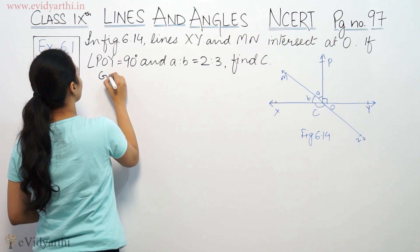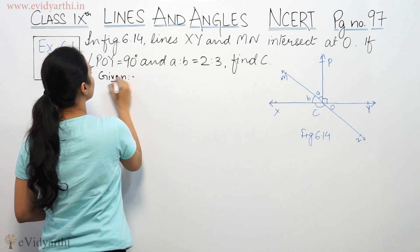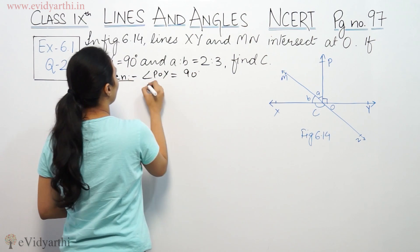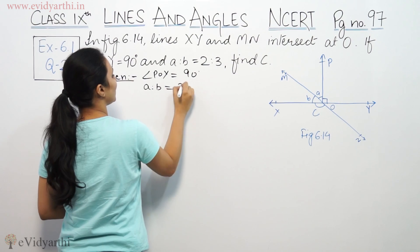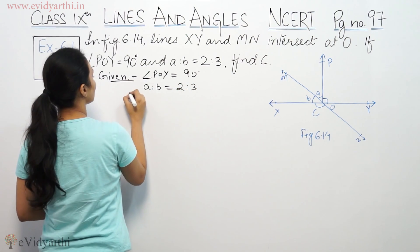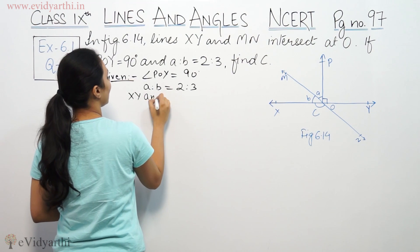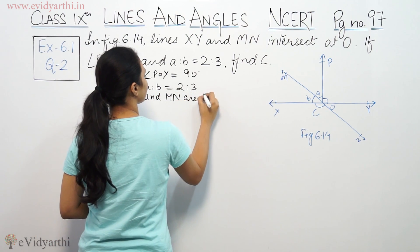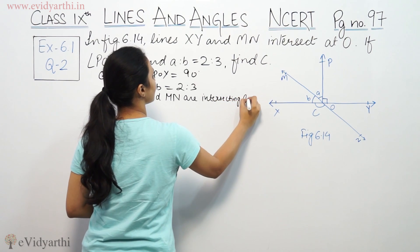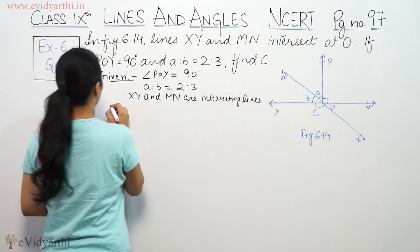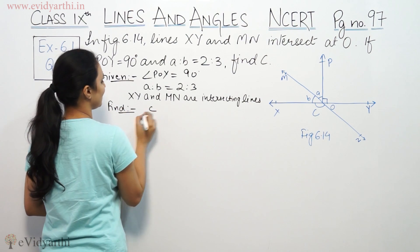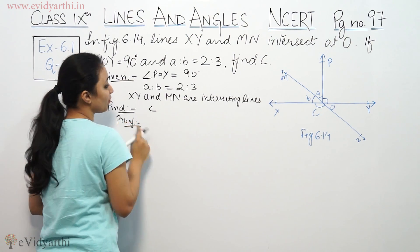So given: angle POY is 90 degrees, a to b equals 2 to 3, and XY and MN are intersecting lines. Now we need to find c. Proof: